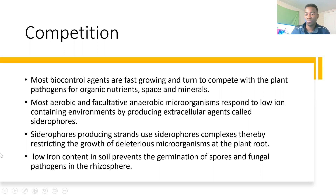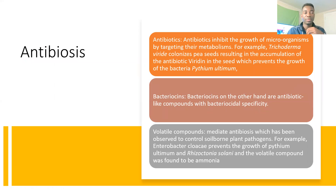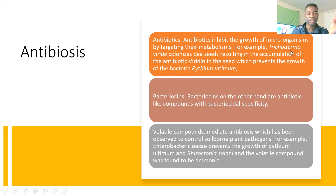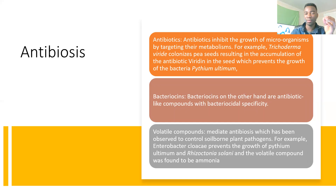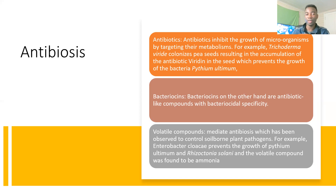Moving on, we are going to dive deep into antibiosis, which has three different categories. Firstly, antibiotics basically inhibit the growth of microorganisms by targeting their metabolism and shutting it down, thereby killing them, because they need that process to grow and reproduce. For example, Trichoderma viridae colonizes pea plants, resulting in accumulation of antibiotics like viridin in the seed, which prevents the growth of the plant pathogen Pythium ultimum, saving the plant.